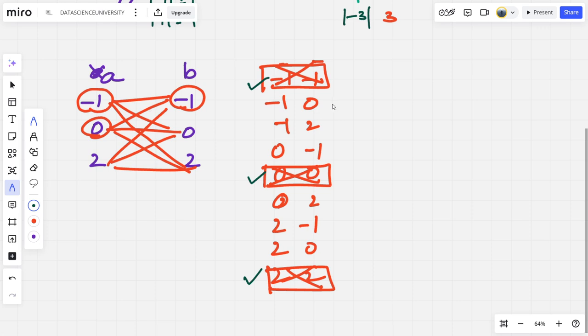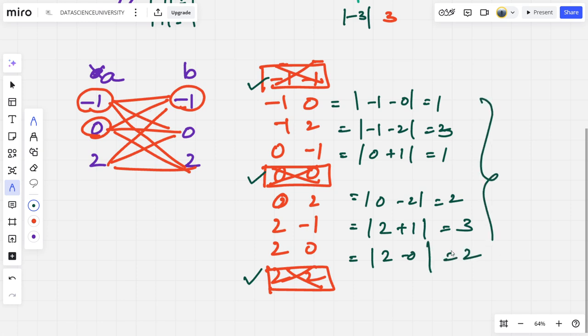We have done a cross-join, remove the same things. Now I will calculate the absolute distances, which is modulus of minus 1 minus 0 is 1. Modulus of minus 1 minus 2 is 3. Modulus of 0 minus minus 1 is 1. 0 minus 2 modulus is 2. 2 minus minus 1 is 3. 2 minus 0 is 2. So these are the final distances. Out of that, what I should take? I should take the minimum value. Let us do that.